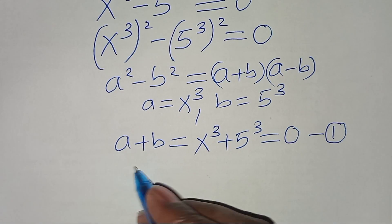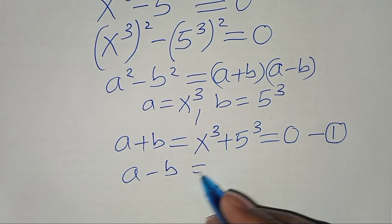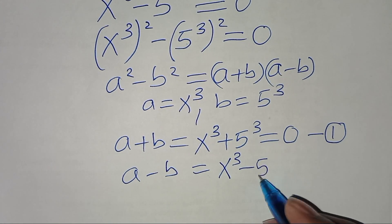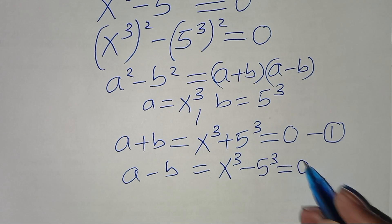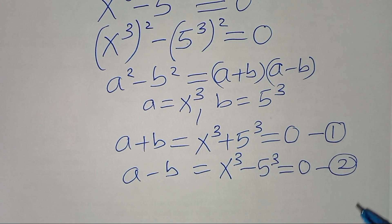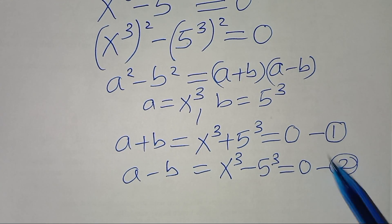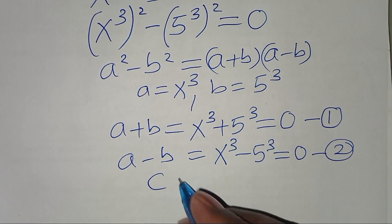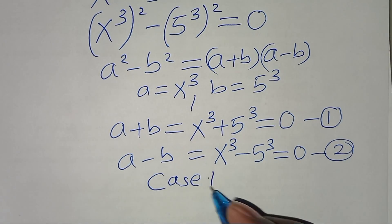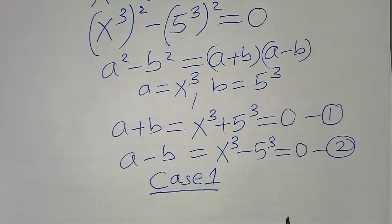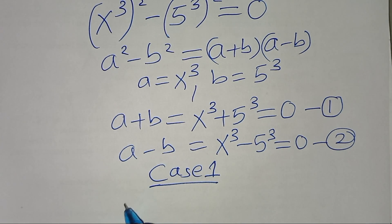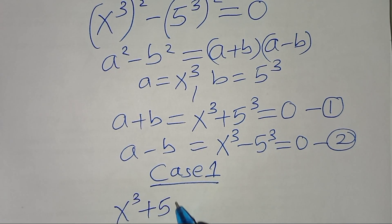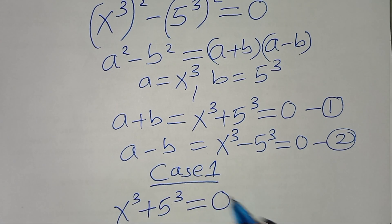The second factor gives us x to power 3 minus 5 to power 3 equals 0 — let's call this equation 2. Now let's start solving equation 1, which we'll call case 1. In case 1, we have x to power 3 plus 5 to power 3 equals 0.